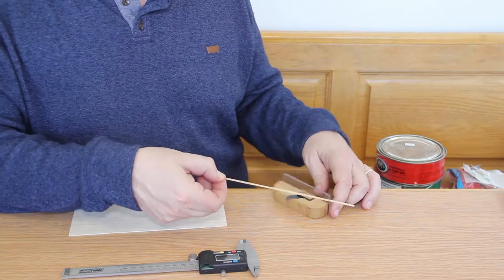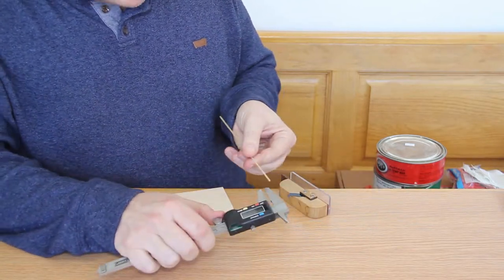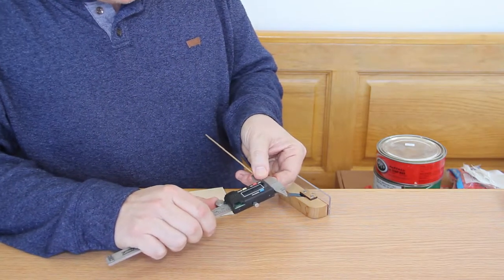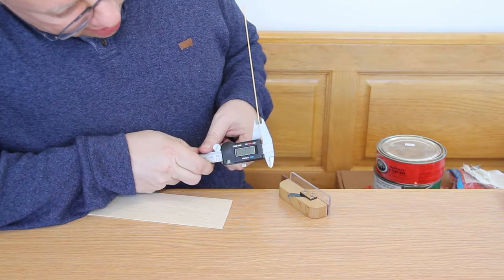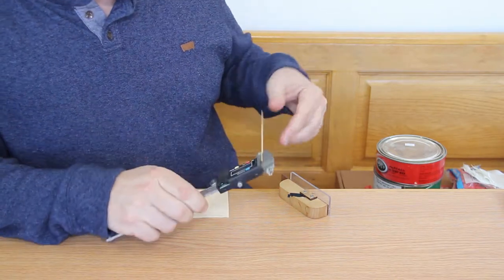So what I like about this particular method of doing it is it seems to be very consistent. And see, this is approximately, I said about 45, between 45 and 50 thousandths, and I'm pretty darn close. It's 47 thousandths.